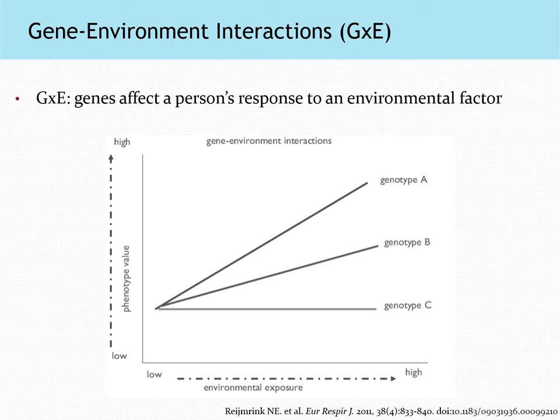Looking at this graph in the context of ALDH2 deficiency, the x-axis will be alcohol consumption and the y-axis will be unpleasant side effects like flushing and nausea. Genotype A would be someone homozygous for ALDH2 loss of function alleles — they're very sensitive and get those effects as soon as they start drinking. Genotype B is heterozygous, getting some flushing and nausea especially with heavy drinking. Genotype C has two normal function alleles and is not sensitive at all, because their body efficiently breaks down acetaldehyde. For this example, our gene is ALDH2, our environmental exposure is alcohol consumption, and our outcome is a flushing reaction.